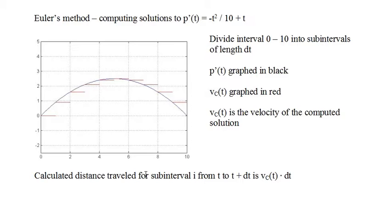Euler's method begins by subdividing the time interval of interest into shorter subintervals of length dt. The graph shows p prime of t, the true velocity function, graphed in black, and the approximate velocity function v sub c of t used by the Euler approximation, graphed in red. At the start of each subinterval, the black true velocity and the red approximate velocity are equal. The approximate velocity remains constant for the duration of the subinterval and is hence horizontal — such a function is called a step function. Distance traveled in each subinterval is calculated by multiplying the value of the red approximate velocity function in the subinterval times the subinterval length dt.